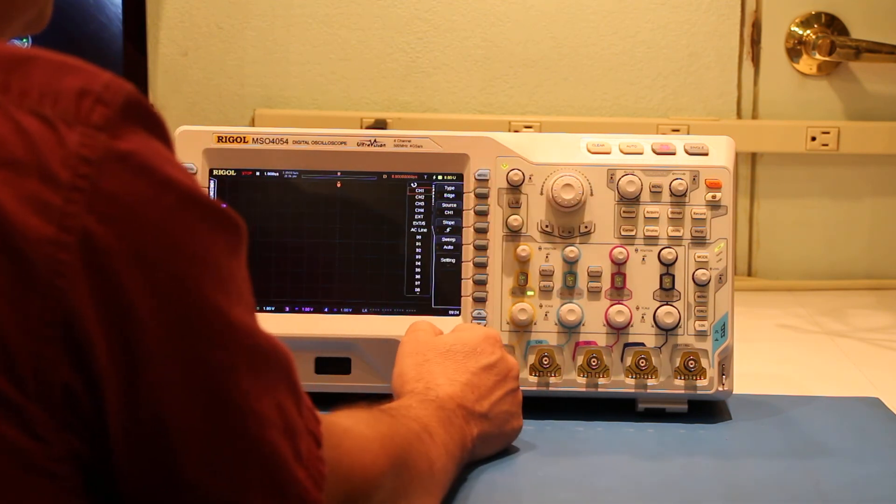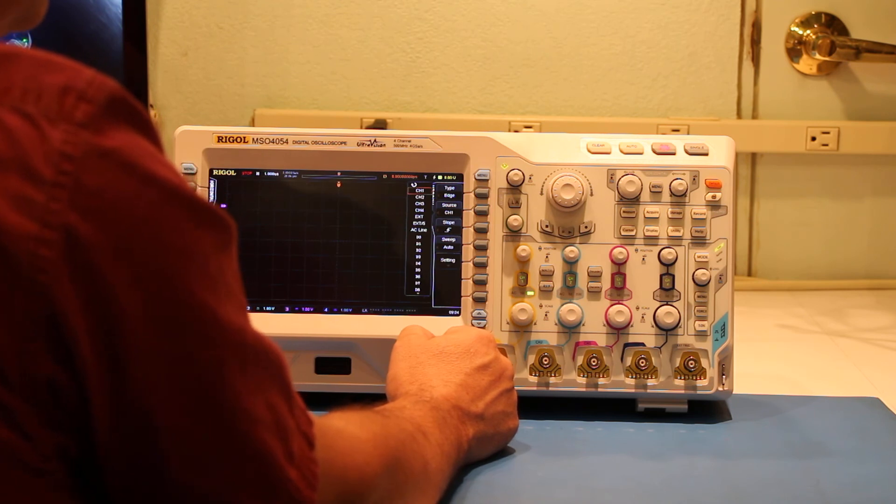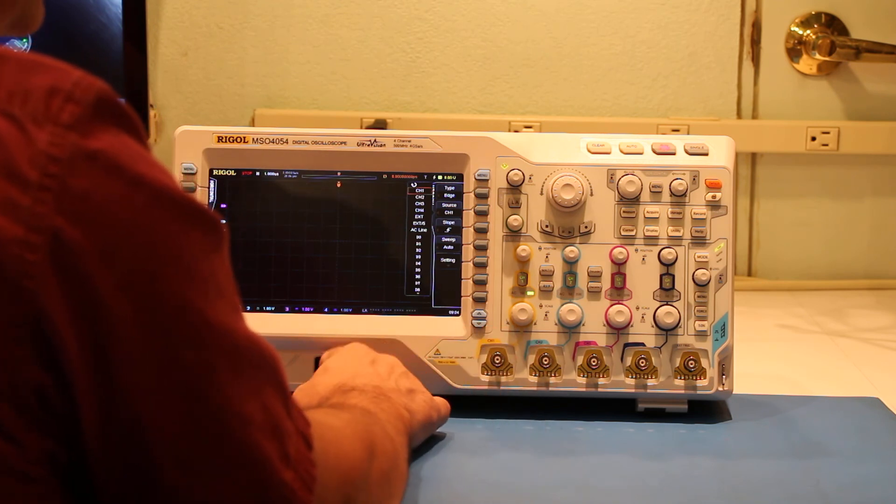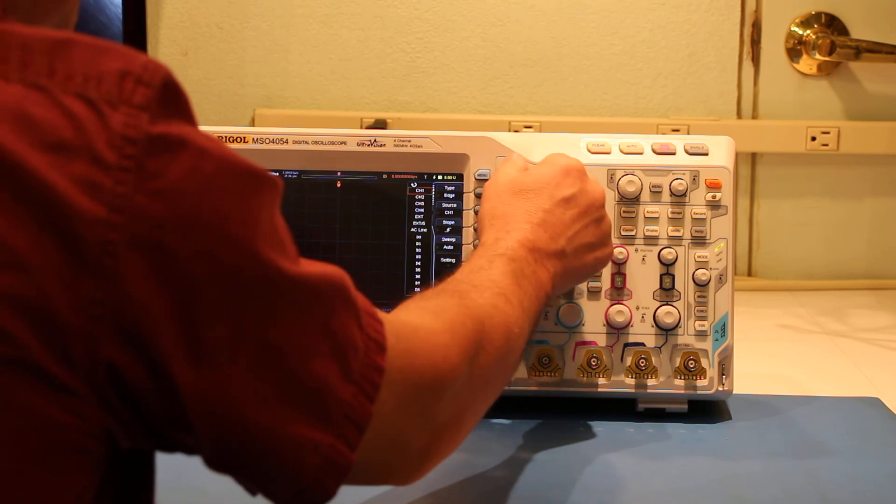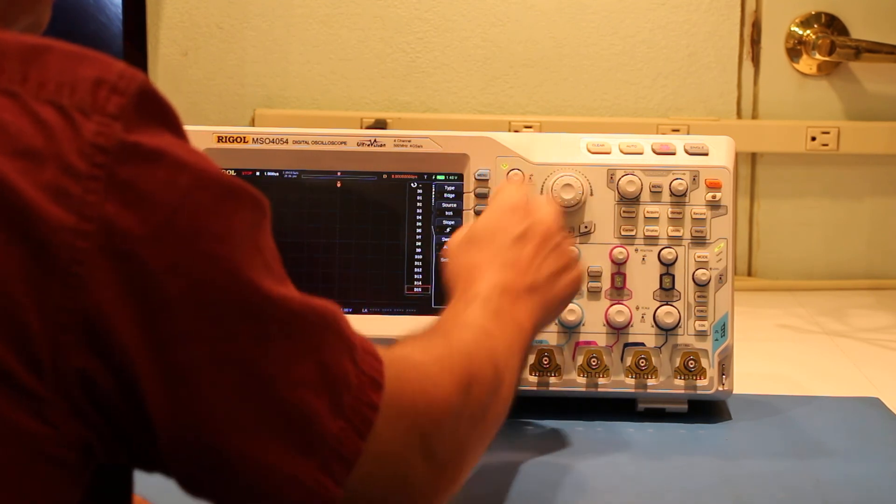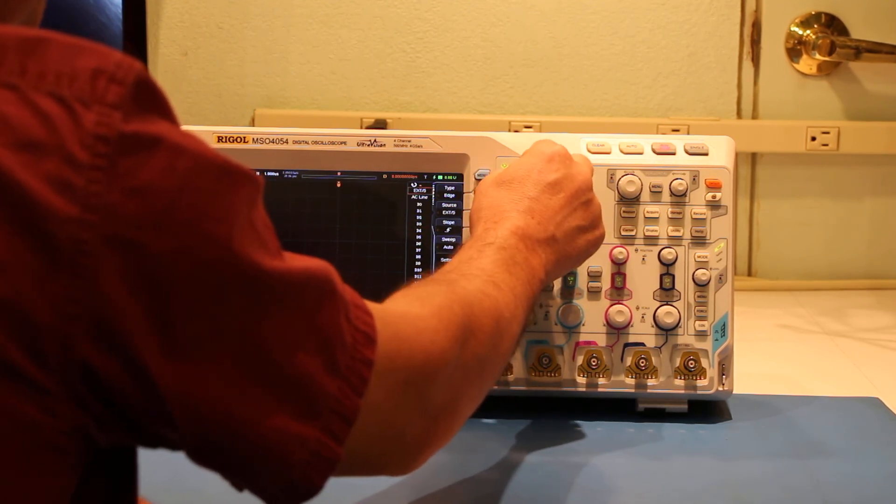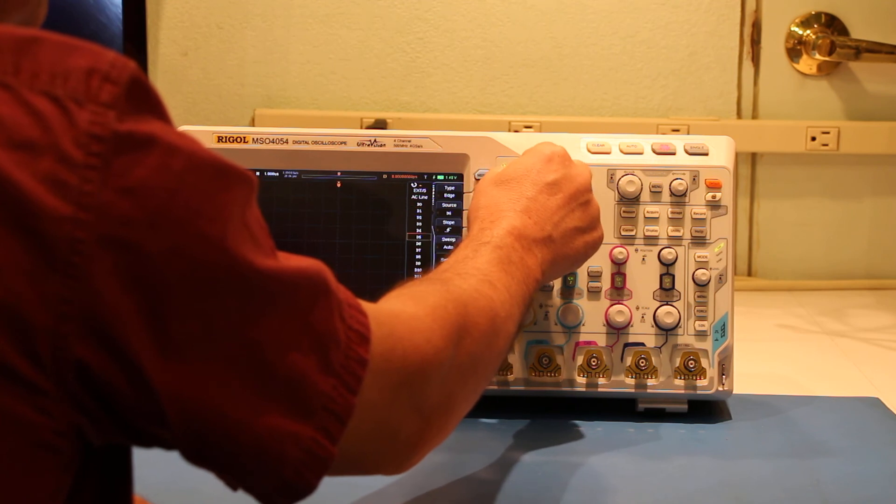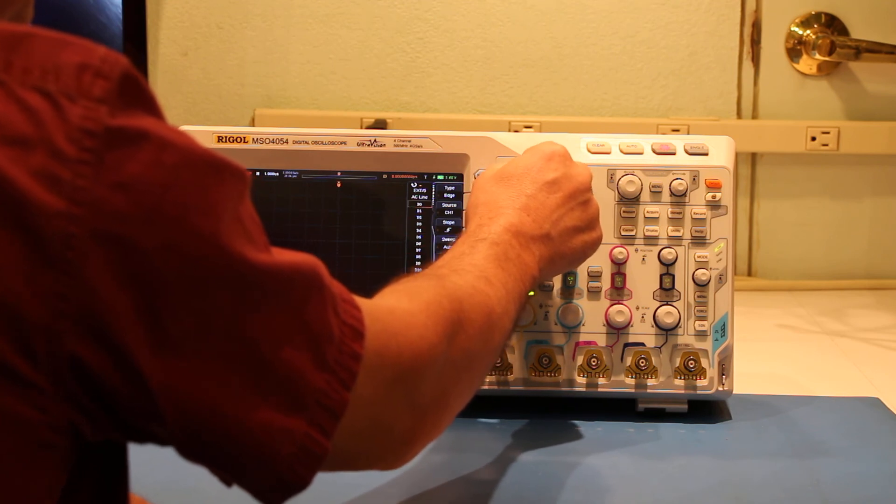Change the source. Now this is also the version that has the 16 channel logic analyzer, so it also has the ability to select to be able to trigger from all those different inputs: D0 through D15, plus some of the other items.